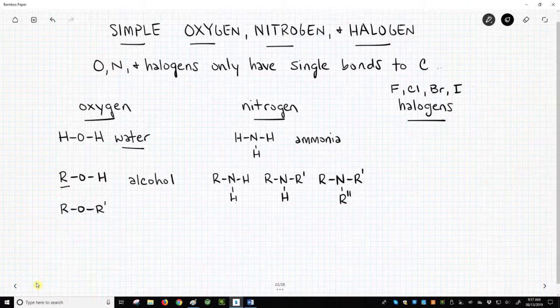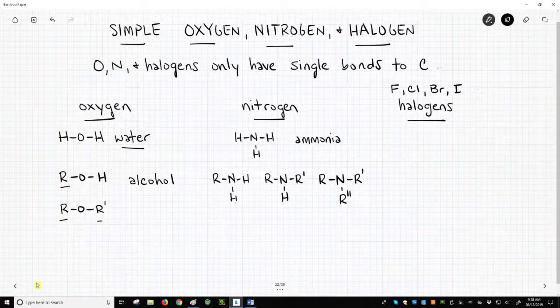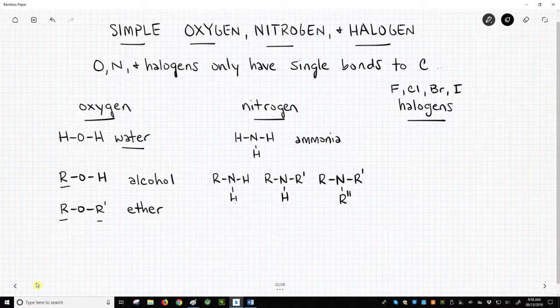If we return to water and replace both hydrogens with carbon groups, again R groups, then our oxygen is sandwiched between two carbon groups. This is called an ether. Alcohols and ethers are common in drug-like molecules.